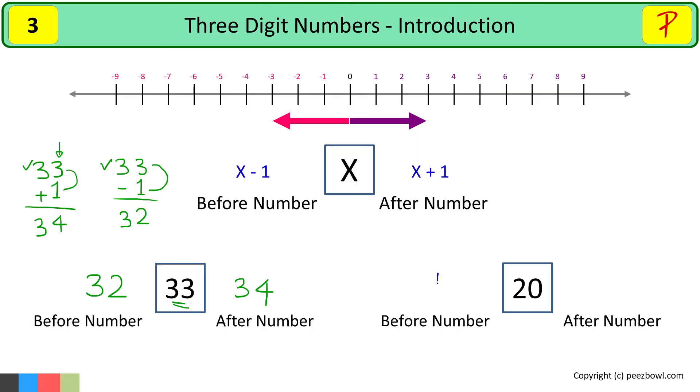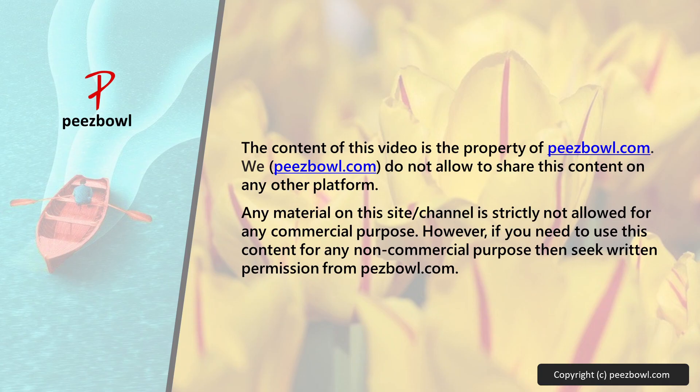So we have 19 before 20. And we have 21 after 20. Hope this concept is clear to you. I will bring more examples in my next videos. Thanks for watching.